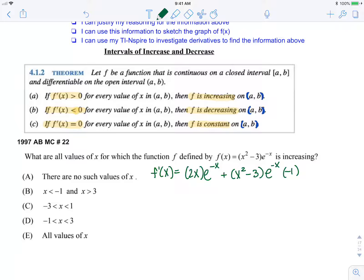In order to evaluate where it's increasing or decreasing, I need to get this into factored form. First thing I'm going to do is factor out an e to the negative x, and that leaves 2x minus x squared plus 3. So f prime of x equals e to the negative x times negative x squared plus 2x plus 3.